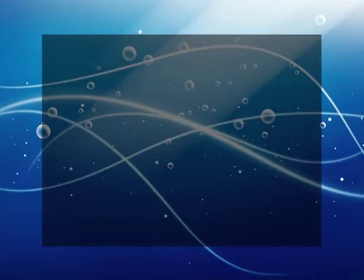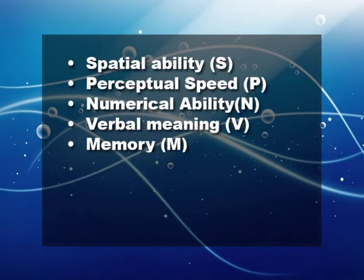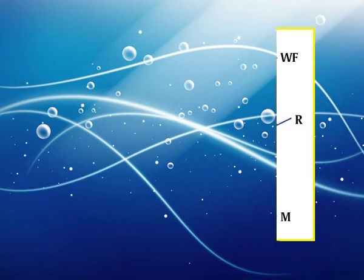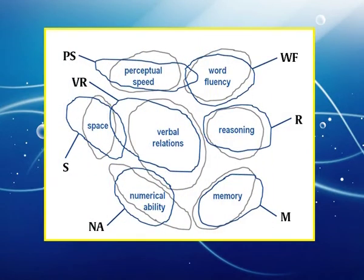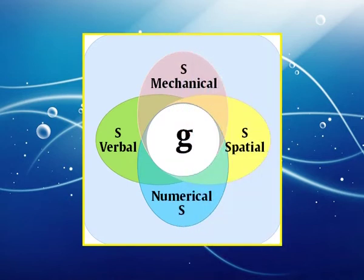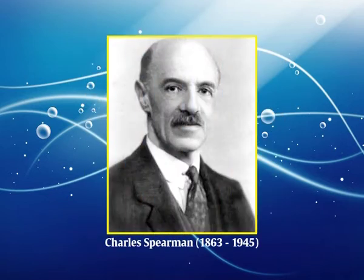The seven abilities are: spatial ability (S), perceptual speed (P), numerical ability (N), verbal meaning (V), memory (M), word fluency (W), and reasoning. These abilities are relatively independent of one another. A person with high spatial ability might be low on verbal fluency, but taken together these abilities can be conceived as general intelligence, as proposed by Spearman.